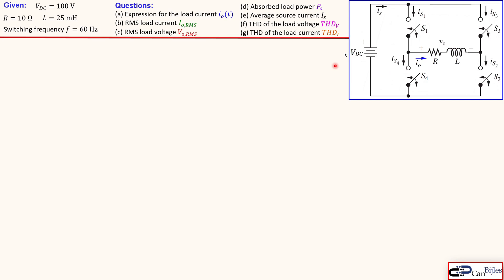This is the circuit, which we have discussed in the previous example. We have a DC voltage source and four switches. S1 and S2 are on and off at the same time, and S3 and S4 are also on and off at the same time. We can observe the load current, load voltage, source current, and also the current through the switches when they are on.